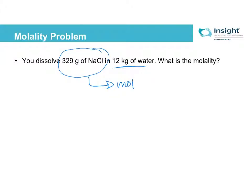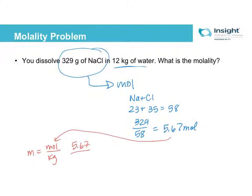So sodium, Na plus Cl, 23 plus 35, which is 58. So we're going to do 329 divided by 58, which gives me 5.67 moles. And then my molality is equal to moles over kilograms. So I'm going to plug this in for moles, 5.67 and 12 for kilograms. And that's going to give me 0.47 molar sodium chloride.